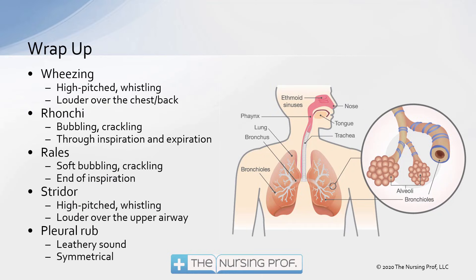To summarize: wheezing is a high-pitched whistling sound, louder over the chest and back, caused by secretions or bronchoconstriction in the large airways. Ronchi, or coarse crackles, produce a bubbling or crackling sound throughout inspiration and expiration. Rales, or fine crackles, produce a soft bubbling or crackling sound at the end of inspiration, indicating fluid accumulating in the alveoli or atelectasis.